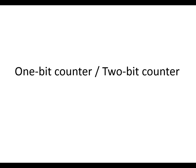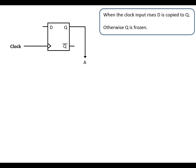One bit and two bit counters. So this is the flip-flop and we know from the flip-flop from previously that when the clock input rises whatever is at D gets copied to Q, otherwise Q is going to be frozen.